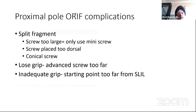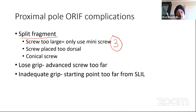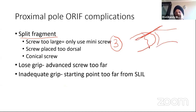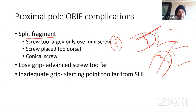The problem with putting a screw in the proximal pole — this is where you have to be careful. Number one, you can split the fragment, especially if you're doing a delayed case or the bone is avascular and very brittle. I would recommend only use a mini or even a micro screw. The screw should definitely not be more than three millimeters in the trailing edge or you'll split the fragment as you do the final tightening. Because we are doing a dorsal approach, if you haven't flexed the wrist enough, you could end up putting a screw too dorsal and not getting the center of the fragment.